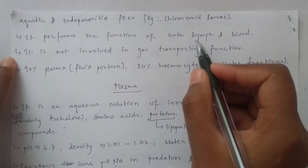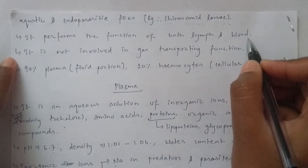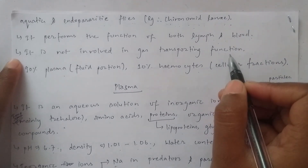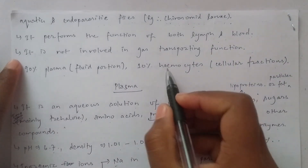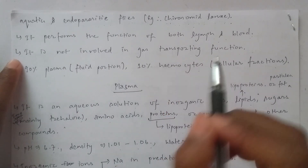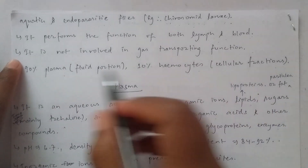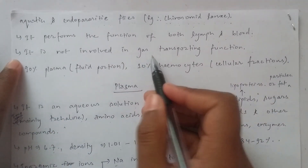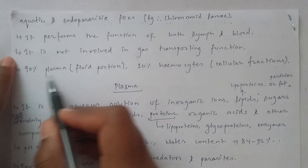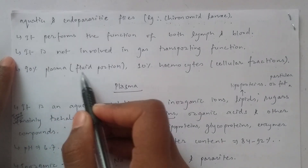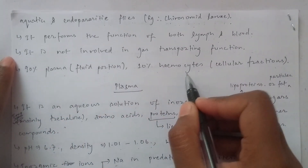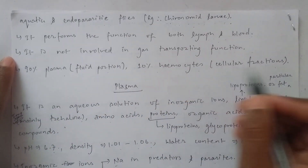Hemolymph performs the function of both lymph and blood. However, it is not involved in gas transport in insects.